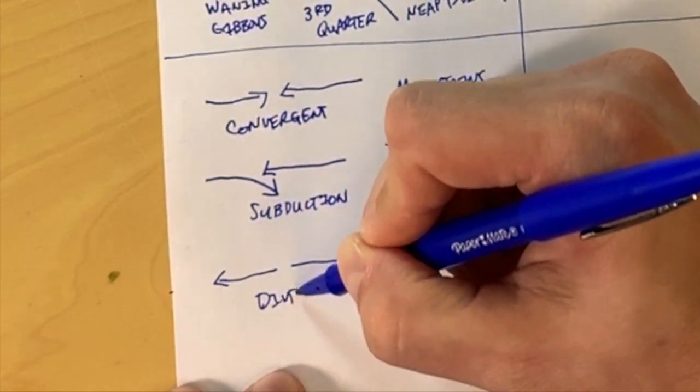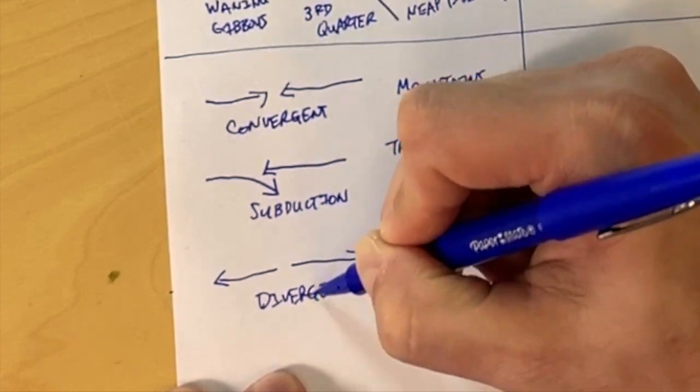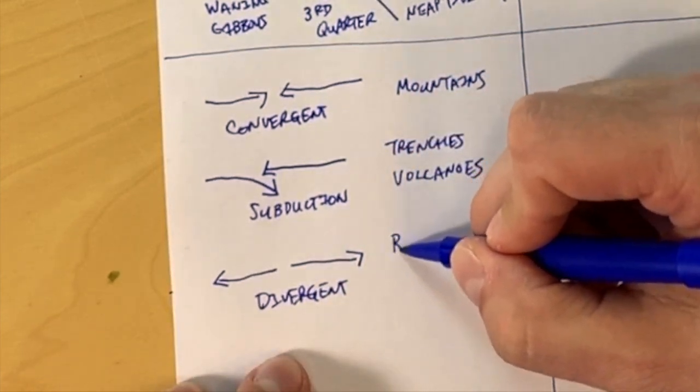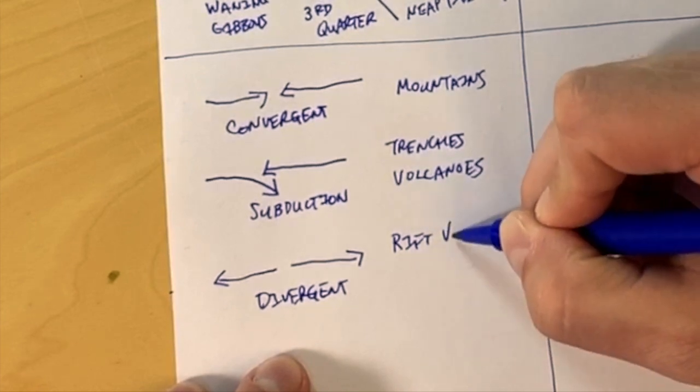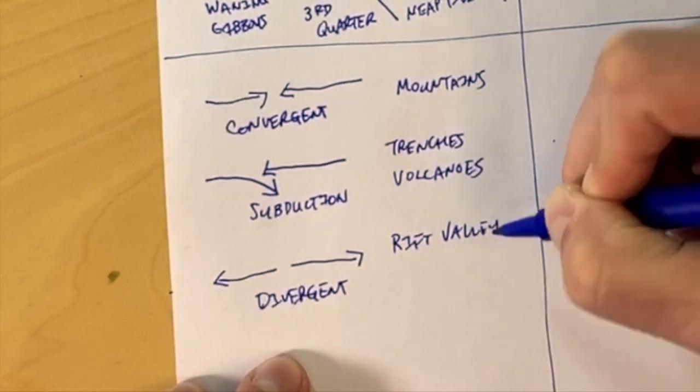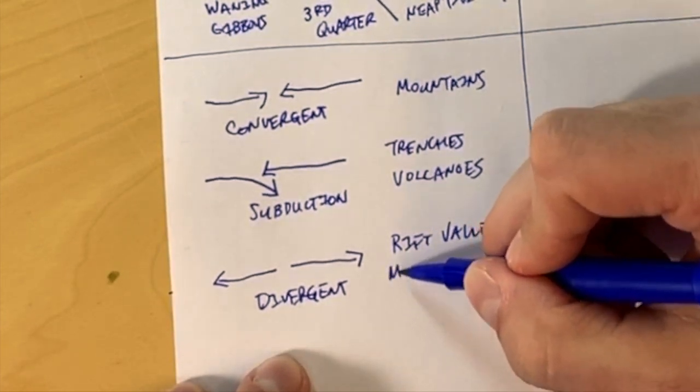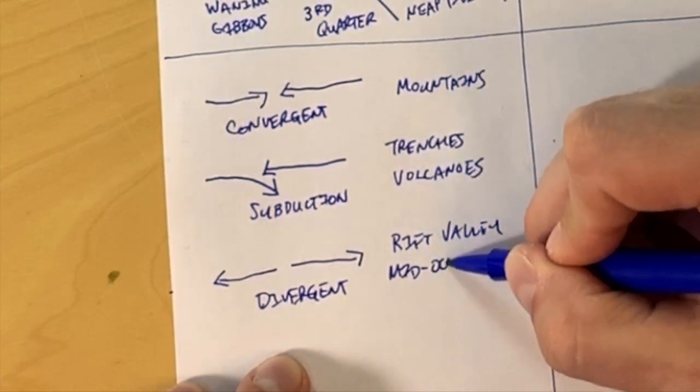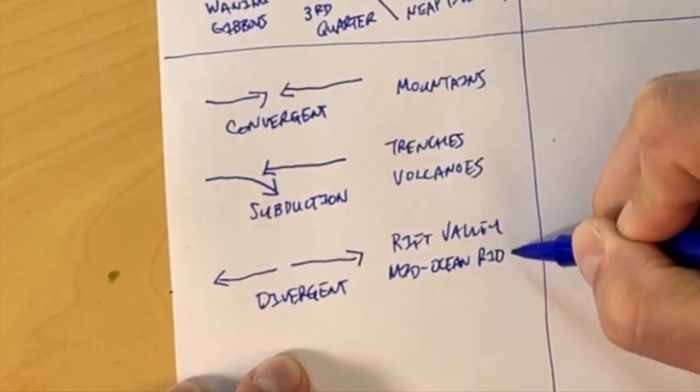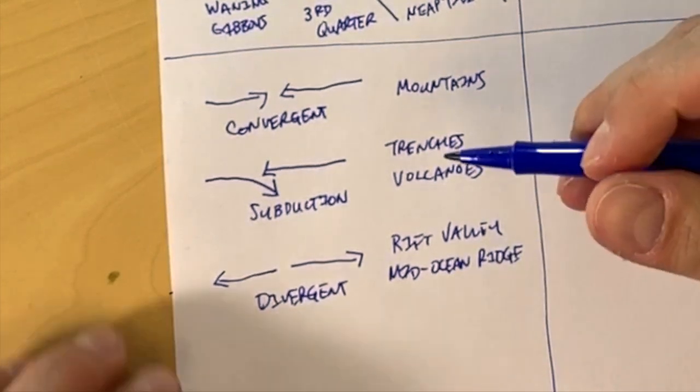Next, we have plates that are going apart from each other or diverging. Those are called divergent or that's called a divergent plate boundary. When two continental plates diverge, they create rift valleys. And when two oceanic plates diverge, they create mid-ocean ridges.